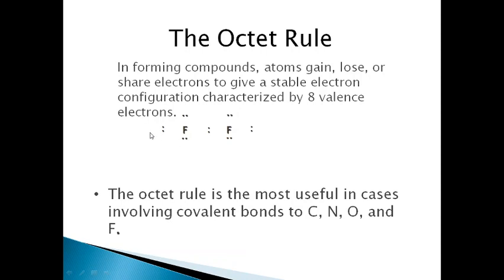So the octet rule means 8 valence electrons are satisfied — atoms gain, lose, or share electrons to give a more stable electron configuration. For example, counting: 6, 7, 8 electrons — or 1 pair of electrons, then 2 — reaches an octet of 8. The octet rule is most useful in the cases of carbon, oxygen, nitrogen, and fluorine.